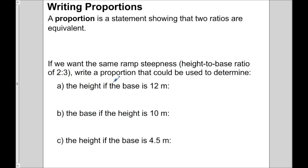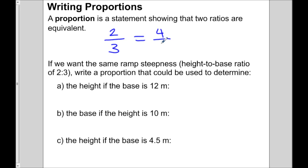Related to ratios is a proportion. A proportion is a statement showing that two ratios are equivalent. For instance, two-thirds equals four-sixths — that is an example of a proportion because it shows that the two ratios are equivalent or equal to each other.